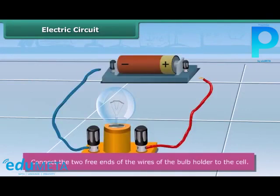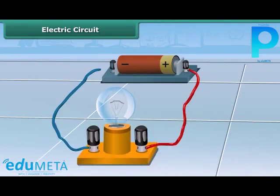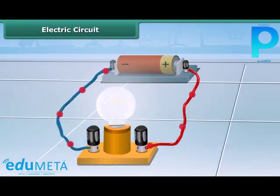Connect the free end of one wire to the positive terminal of the cell and the free end of the other wire to the negative terminal of the cell. This may be done with the help of a rubber band or an adhesive tape. After the connection, you can see that the bulb lights up.